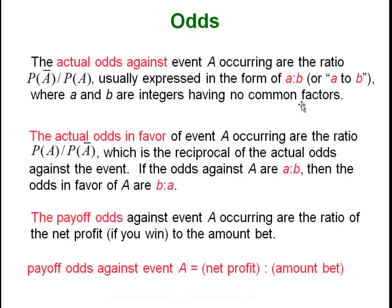Odds are just another way of describing probability — you don't need to understand odds at all to be successful in statistics. It's like describing a number as a fraction or a decimal; it's the same thing expressed differently. The odds against an event are listed as a ratio A to B, where A is the probability of the event not happening and B is the probability of it happening. The odds in favor are just the opposite. So when you hear a team's odds are 3 to 2 or 1 to 5, that's how odds work.